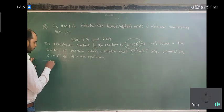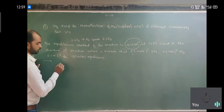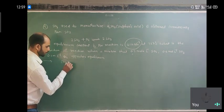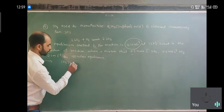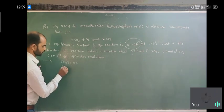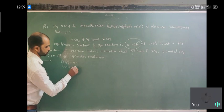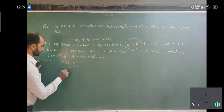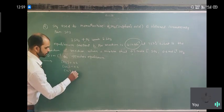Here we have the given values. We have the concentration of SO2, it is given 0.2. Concentration of SO3 is given, it is 0.4, and concentration of O2 is given, it is 0.1.